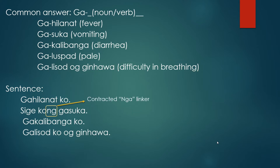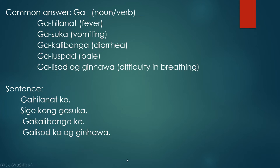You'll notice in our grammar the 'ng' is added to pronouns — like 'ko' becoming 'kong.' It is actually a contraction of the linker 'nga.' So instead of 'sigi ko nga ga suka,' the long form, you just say 'sigi ko ga suka.' That's vomiting. Next: 'ga kalibanga ko' means 'I'm having diarrhea,' and 'ga lisud ko og ginhawa' means 'I have difficulty breathing,' which is the same meaning as before.